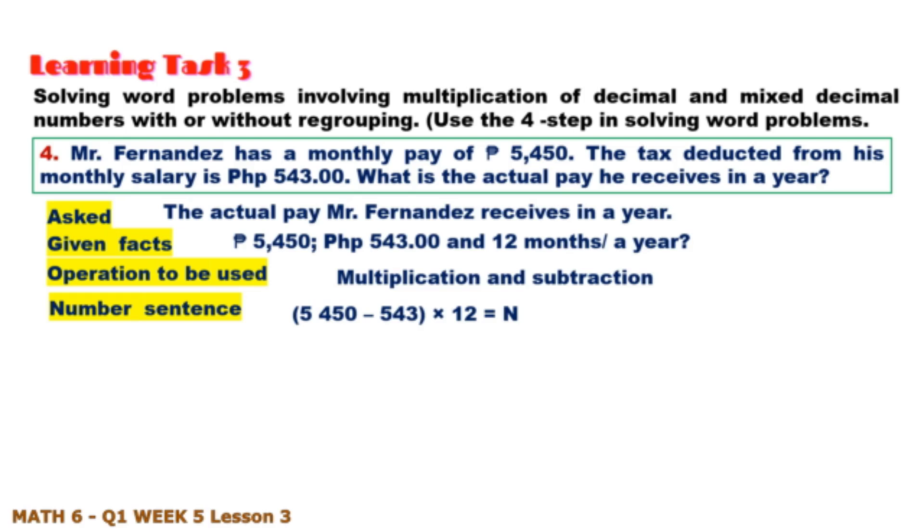Number four: Mr. Fernandez has a monthly pay. And solution. And the answer is 58,884.